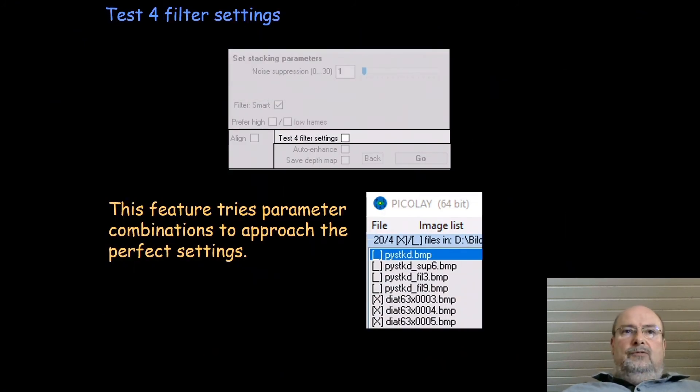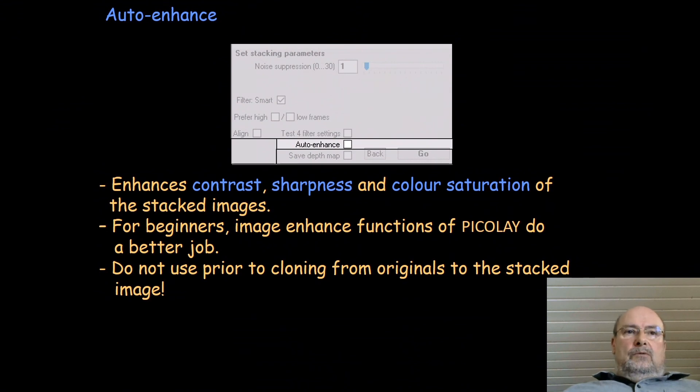One useful thing is this parameter: test for filter settings. It means just try out different settings of the parameters. This takes only very few time, it's a few seconds more. Then you have four different results: standard settings, noise suppression 6, filter of 3, and filter of 9. You can compare the results and that will help to find the perfect settings. It doesn't mean that one of these is the perfect one, but you can see oh, this is quite nice and close to what I would like to have. This is far away. It helps to get better results and it doesn't take much time.